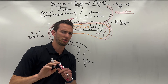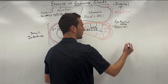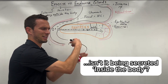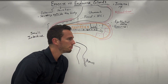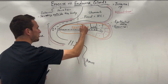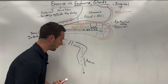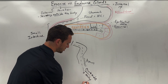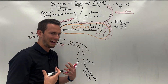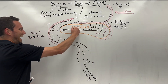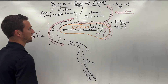Now you may say: you're calling this an exocrine secretion, but isn't it being secreted inside the body, inside the gut tube? No, because technically if we follow this secretion, where is it gonna end up? Through the anus and out of the body. So technically, even though it's secreting into a tube that's within our body cavities, if it's going out of the body, it is an exocrine gland — an exocrine secretion.